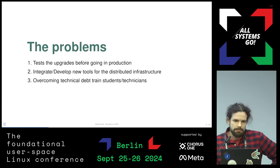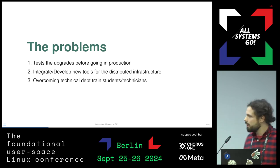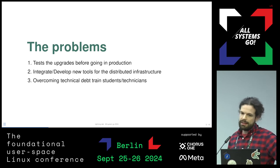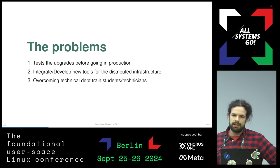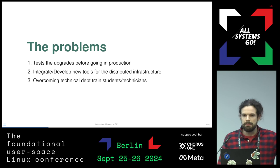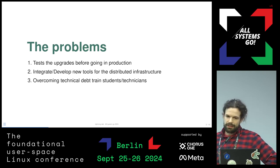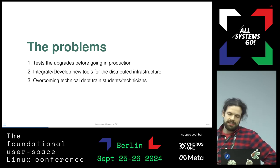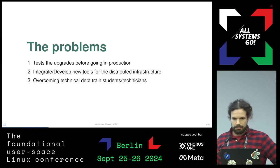This sets up the framework for the problems we have to address. One is testing upgrades before going into production. A test we have to perform quite often is regression — for example, in InfiniBand, or when we perform remote direct memory access over converged Ethernet, or SRIOV. These are all technologies that break quite often with kernel updates.